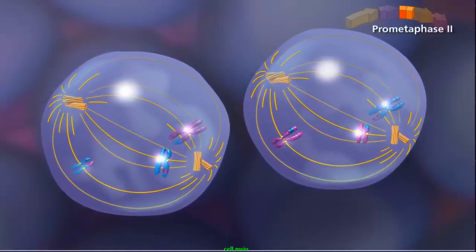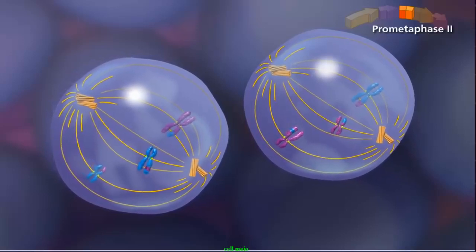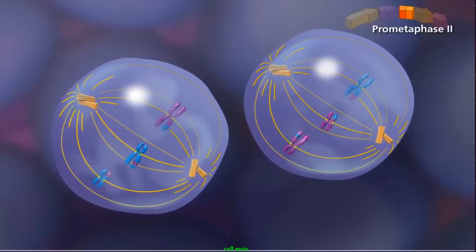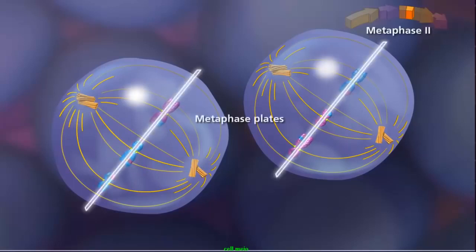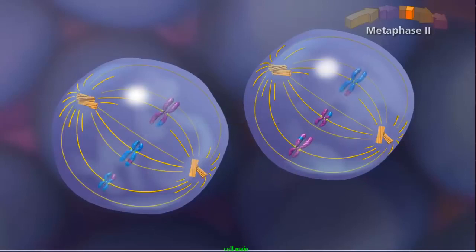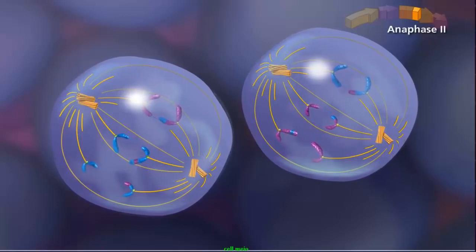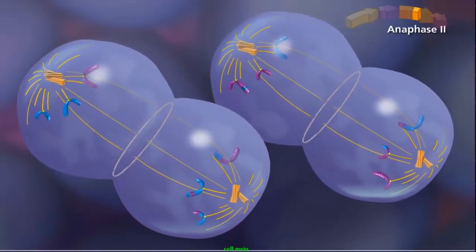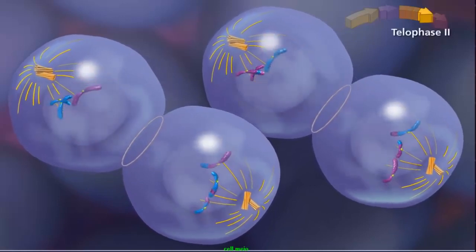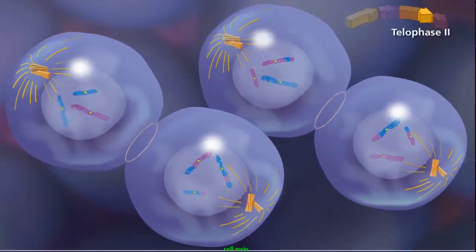In prometaphase II, the sister chromatids attach to the spindle by kinetochore microtubules, with sister chromatids attached to opposite poles. The spindle aligns the sister chromatids along the metaphase plate during metaphase II. During anaphase II, sister chromatids separate and individual chromosomes move toward the poles.